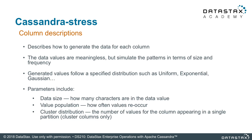The YAML file can help with column definition. This allows us to define how we will generate data for each column. The data generated is contrived, but it is created in such a way to simulate the patterns and frequency of your data. These generated values can follow standard distributions like normal or Gaussian or others. Parameters include: data size, which is how many characters are in the data value; value population, which is how often values reoccur; and cluster distribution, which is the number of values for the column appearing in a partition.